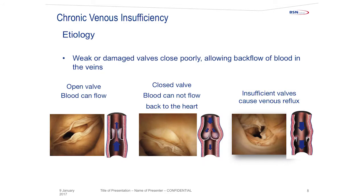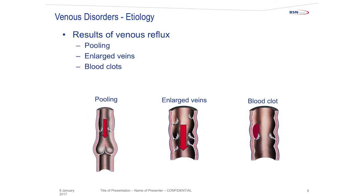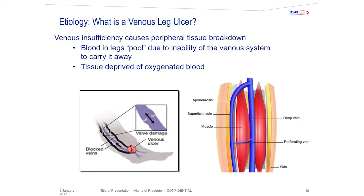With chronic venous insufficiency, the valves are weak or damaged and they close poorly, allowing backflow of blood into the veins. When the valve is open blood can flow; when it's closed blood cannot flow back to the heart. When the valve is insufficient it causes venous reflux. Results of venous reflux are pooling of blood into the tissue and veins, enlarging the veins and possibly causing blood clots. Venous insufficiency causes peripheral tissue breakdown, and when blood pools in the legs the tissue is deprived of oxygenated blood — this is what causes a venous leg ulcer.